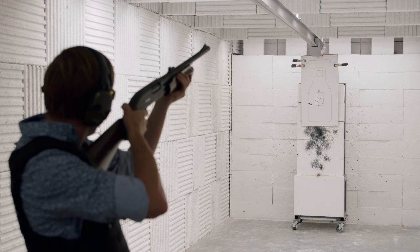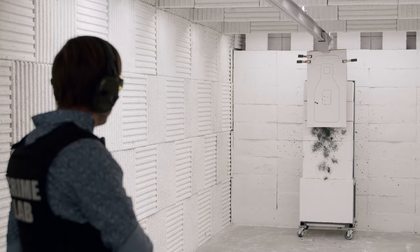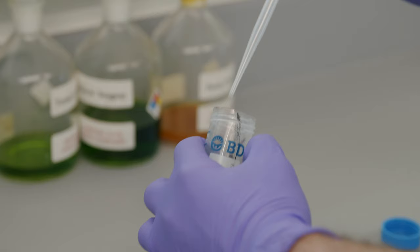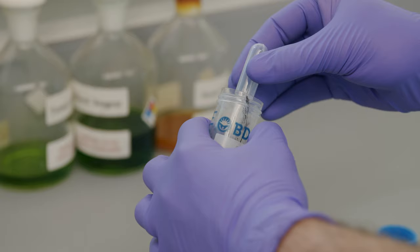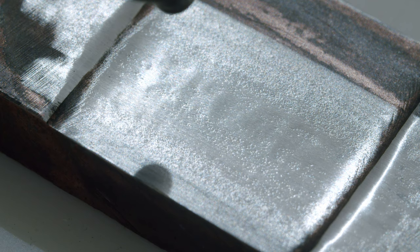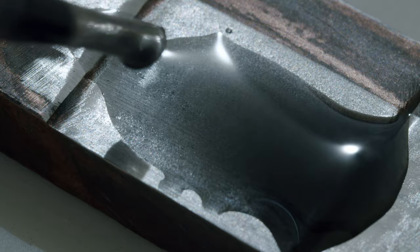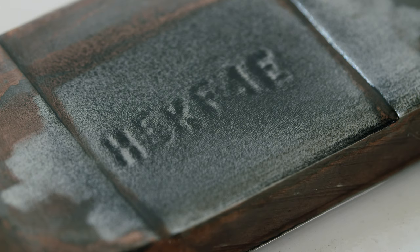One other type of analysis we do here in the laboratory is referred to as serial number restoration. Occasionally, someone will deface or obliterate the serial number on a firearm in order to hide its origin or identity. In those cases, depending on the depth of the obliteration, we can sometimes bring those characters back using a number of different physical restoration and chemical restoration techniques.